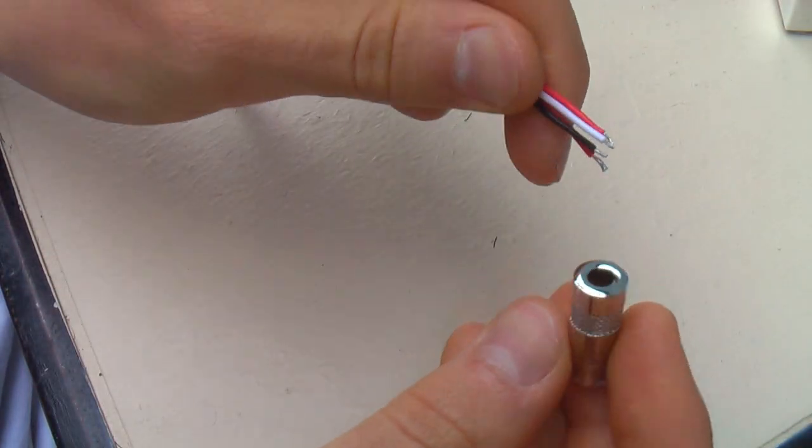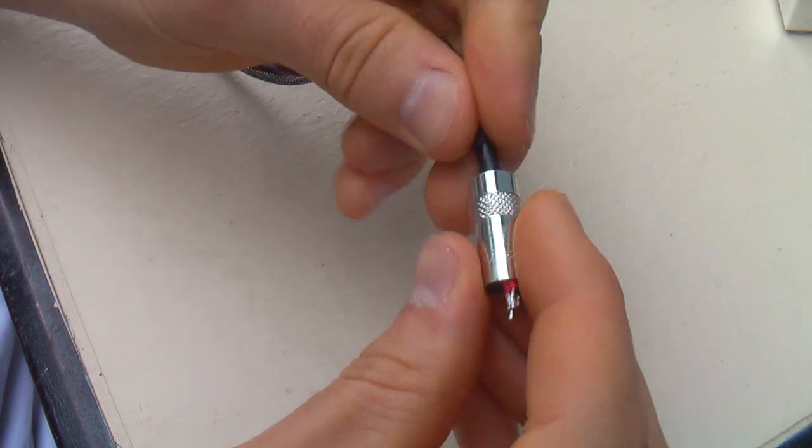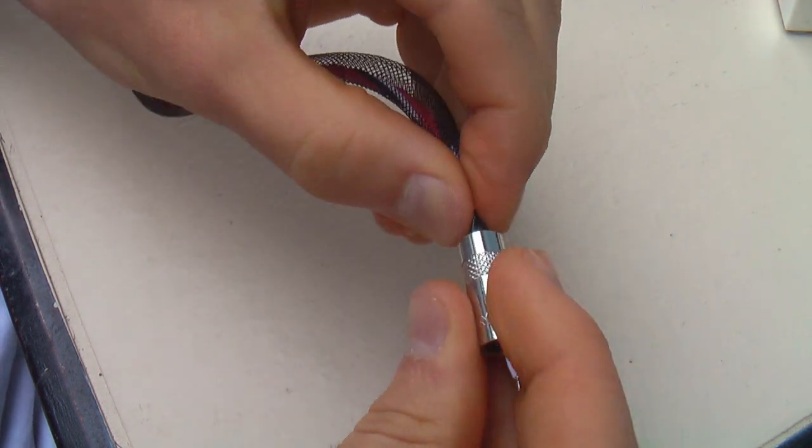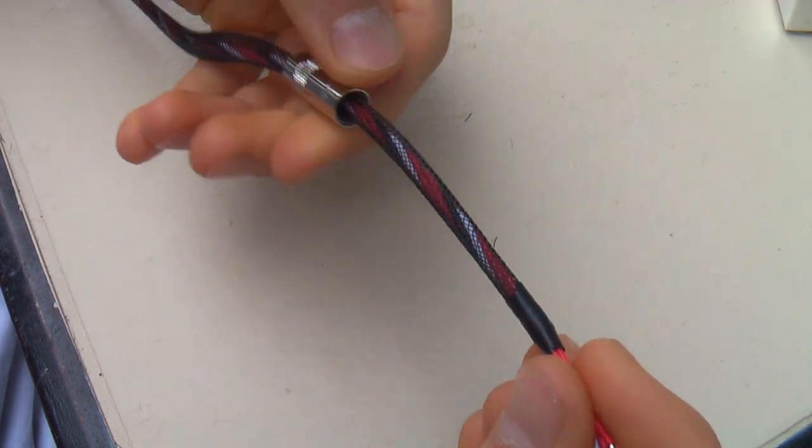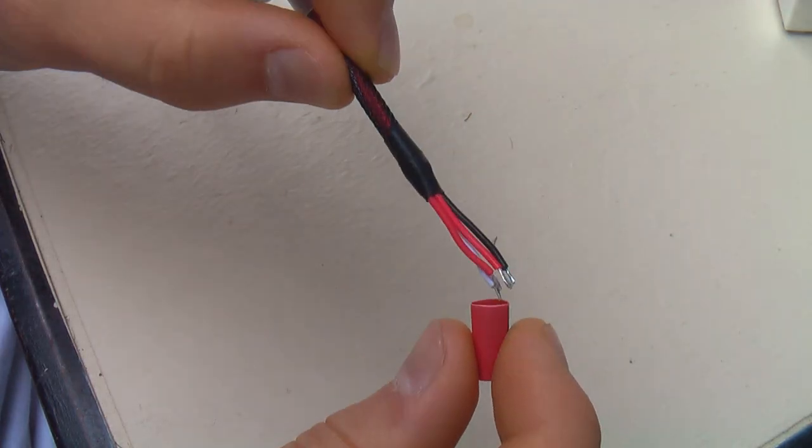And what I also need to do is I need to slip on this metal collar before I start. Just get that on there, as well as this plastic insulation sleeve, and lastly a little bit of heat shrink tubing.